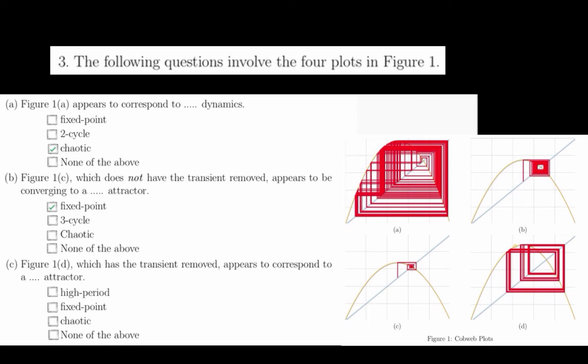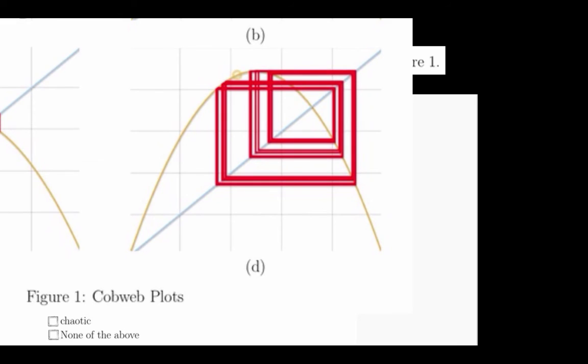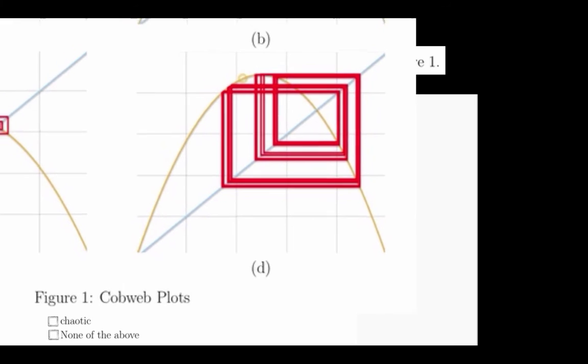For Part C, we are told that Figure 1D has had the transient removed and asked to classify that dynamic. This type of Cobweb plot is associated with high-period attractors.